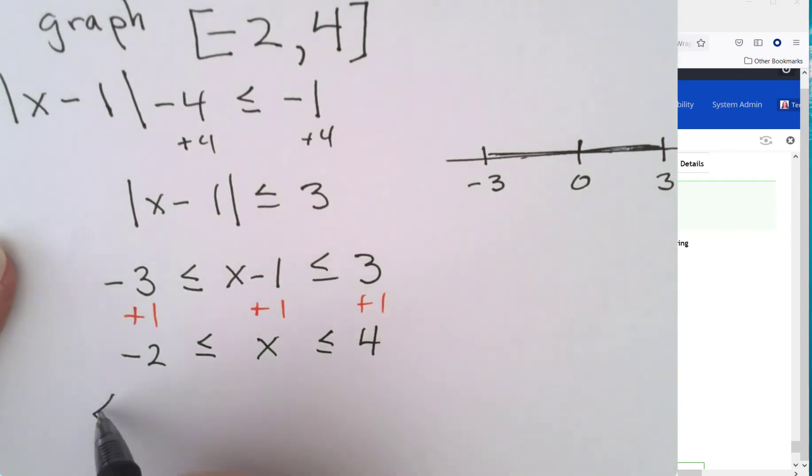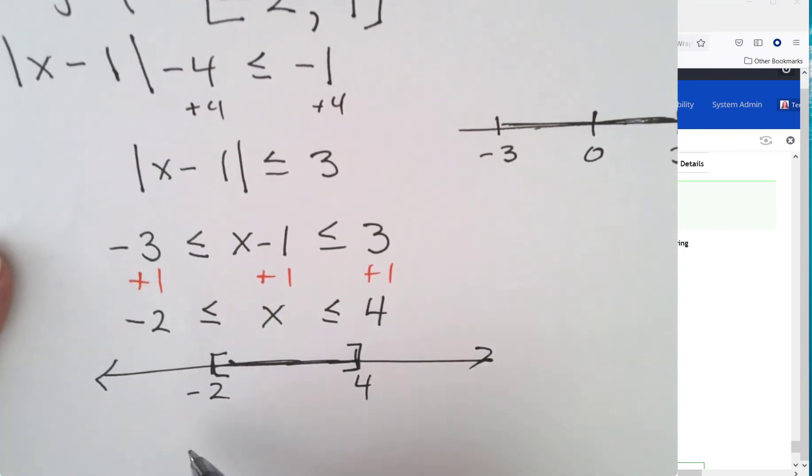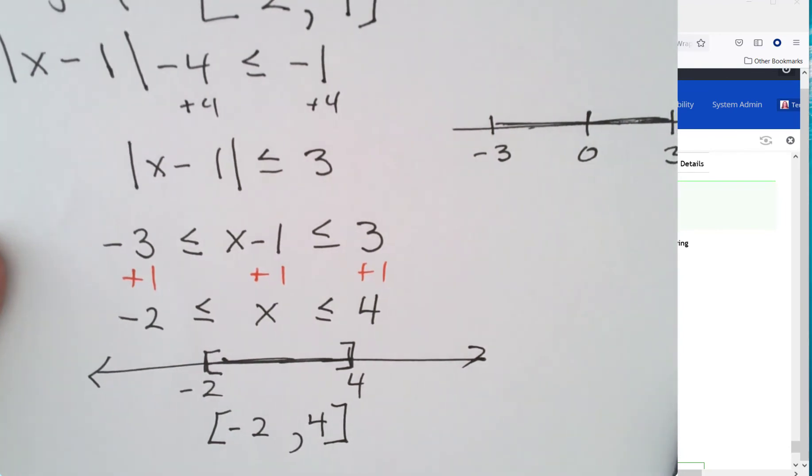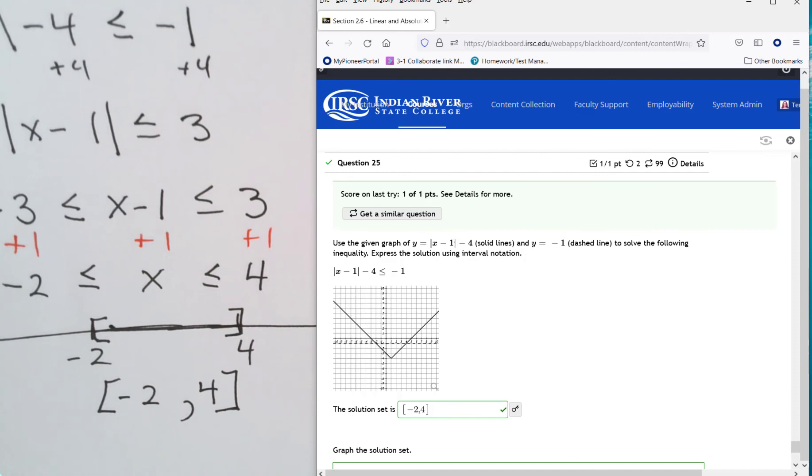And if we want to do a little graph of that. Here's our negative 2. Here's our 4. Right x is between those. And we want a bracket on each of those. And then it would be negative 2 to 4. Which is the same solution that we got algebraically interpreting the graph.